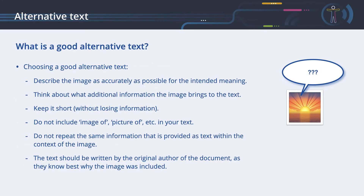What is a good alternative text? Here are some basic guidelines for choosing a good alternative text. Describe the image as accurately as possible for the intended meaning. Think about what additional information the image brings to the text. Keep it short, without losing information.